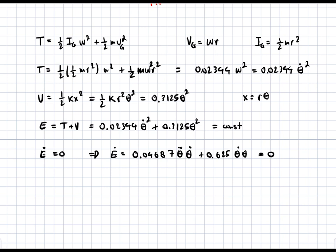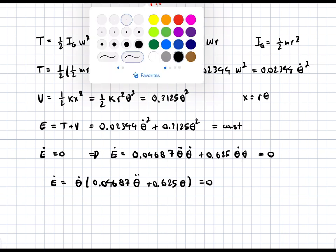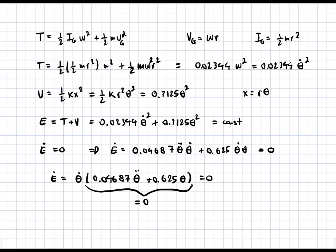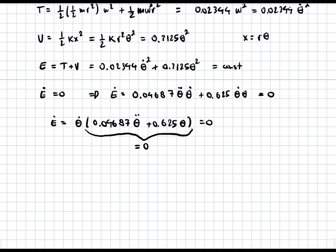We know that E-dot equals 0.04687 theta-double-dot times theta-dot plus 0.625 theta times theta-dot, and this equals zero. We can pull the theta-dot term out of both terms because it is common. Since theta-dot cannot always be zero, the remaining factor must be zero.